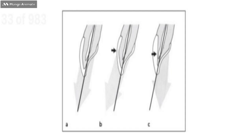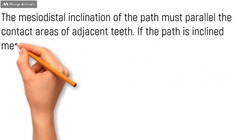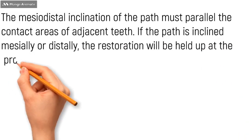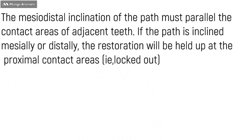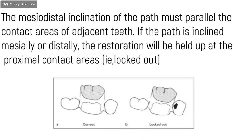In the mesiodistal inclination, the path should be parallel to the contact areas of the adjacent teeth, as shown in this figure A which is ideal. In B, if the path is inclined mesially or distally, the restoration will be held up at the proximal contact area—that is, it will be locked out.